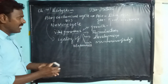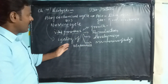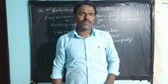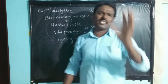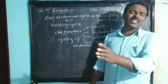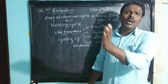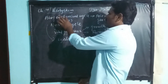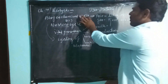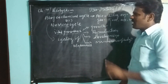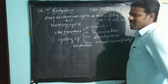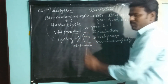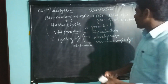The circulation of substances or nutrients within the ecosystem or biosphere is termed the biogeochemical cycle, or nutrient cycle, or cycling of materials.